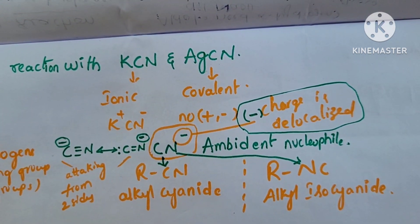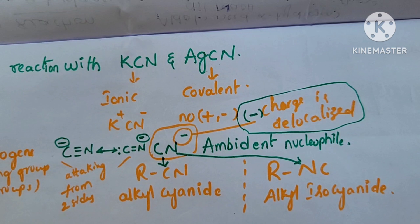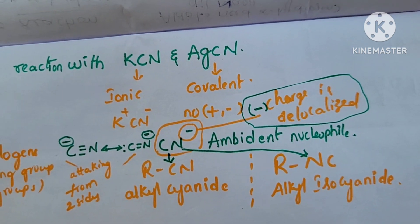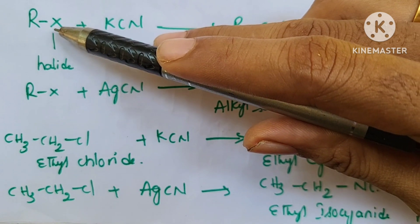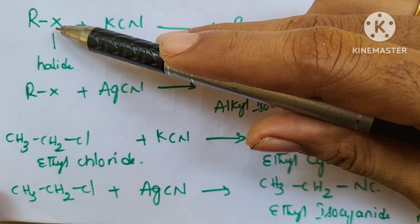KCN and AgCN react with alkyl halides. Alkyl halide is equal to halogens, R-X.